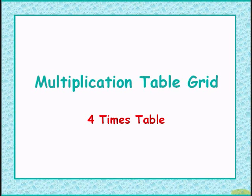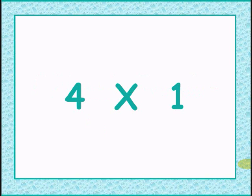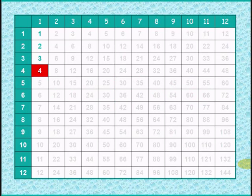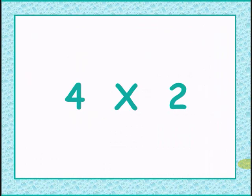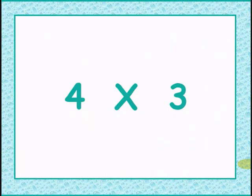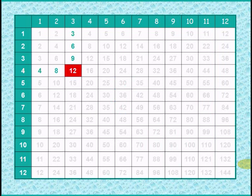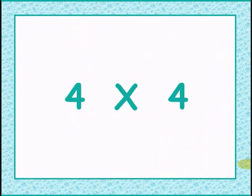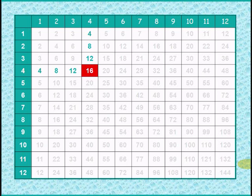Let's start our 4 times table. 4 times 1 gives 4. Adding 4 times 2 gives 8. Adding 4 times 3 gives 12. Adding 4 times 4 gives 16.